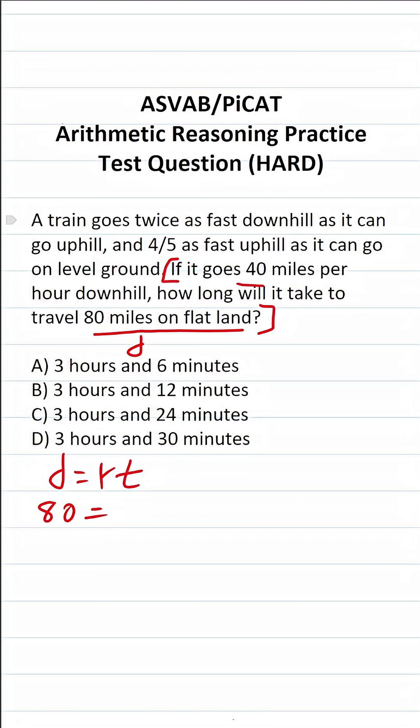We don't know its rate on flat land. Instead, we're given its rate downhill, and we want to know how long. So we're going to be solving the distance formula for T, but we first have to figure out what its rate of speed is across flat land. And we're given three conditions in this case.